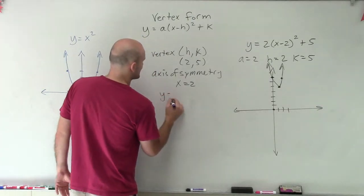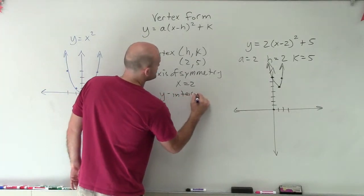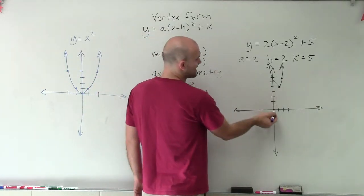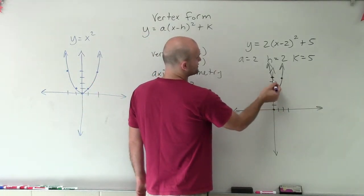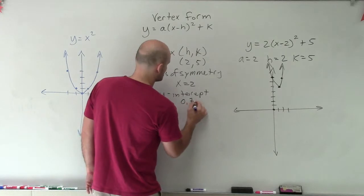Our y-intercept is where the graph crosses the y-axis. And you can see that's at 1, 2, 3, 4, 5, 6, 7. 0 comma 7.